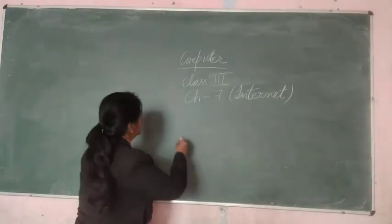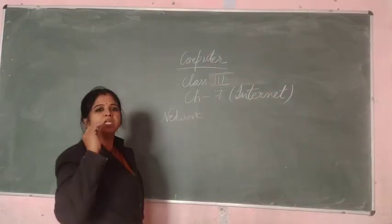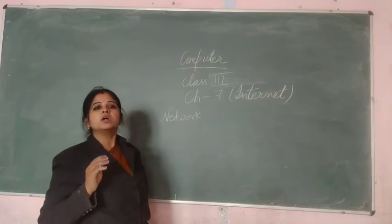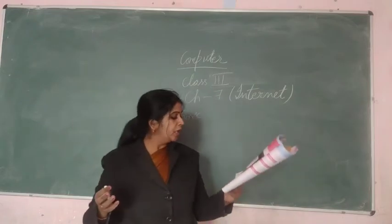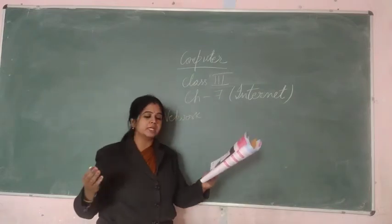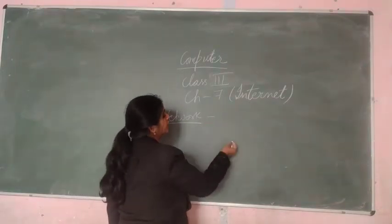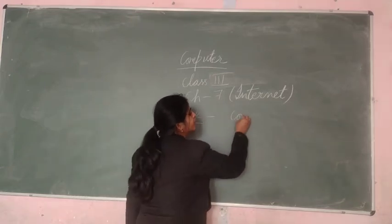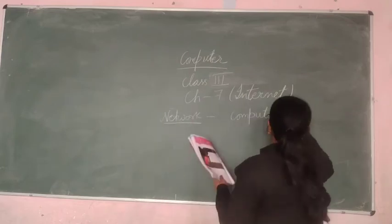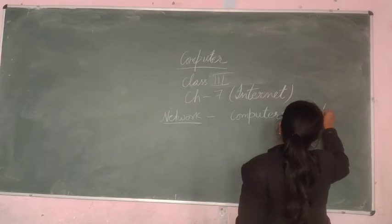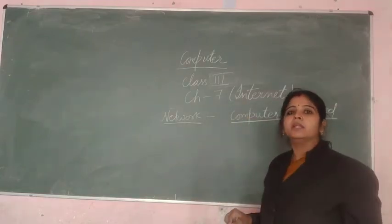In the glossary, the first word is network. What is the meaning of network? Network means connection between two or more computers — that is called a network. A set of computers connected together for the purpose of sharing resources. So connected computers are called a network.